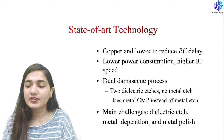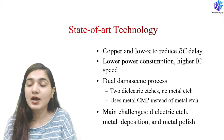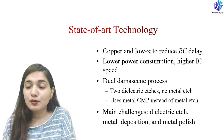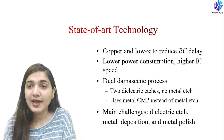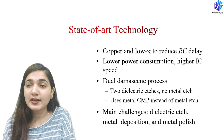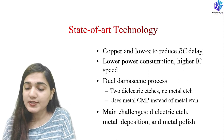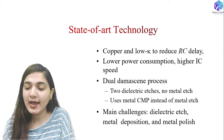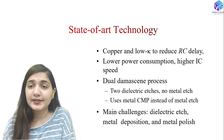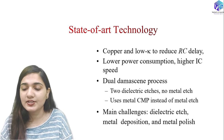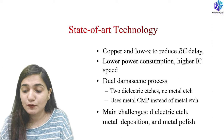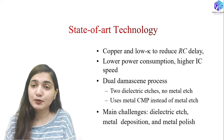Copper and low dielectric constant dielectrics are also used to reduce the RC delay. Copper increases speed and overcomes the electromigration problem encountered with aluminium metallization, giving lower power consumption and high IC speed. Copper is deposited with the dual damascene process — a two-dielectric-etching process — using metal CMP instead of metal etching, with two dielectric etches rather than one.